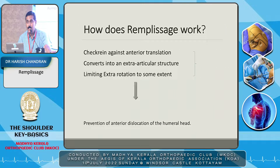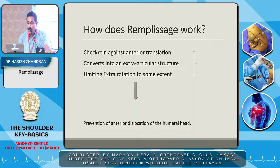The indication for Remplissage is a Hill-Sachs lesion which is engaging, with a soft tissue Bankart and normal or minimal glenoid bone loss. Remplissage works via a checkrein effect against anterior translation — you convert the intra-articular defect into an extra-articular defect, thereby limiting external rotation to some extent and preventing anterior dislocation of the humeral head.